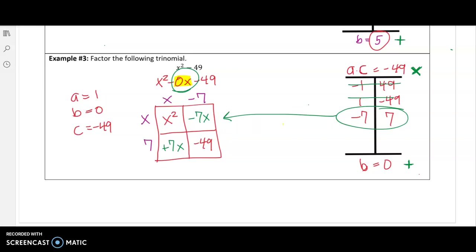The factor along the top was x minus seven. And the factor along the side was x plus seven. Remember, put a plus if it is a positive value. And that is our factored expression, x minus seven times x plus seven.